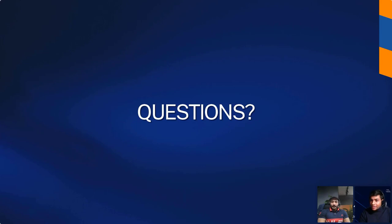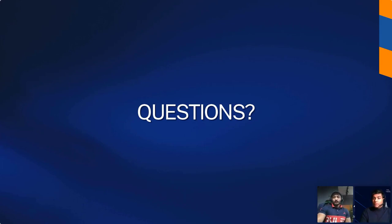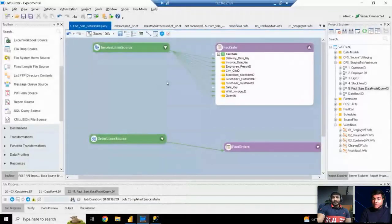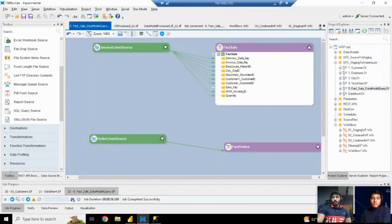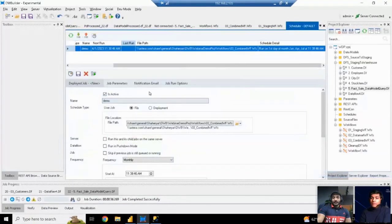There's a question from Tassin: 'How to execute a job — from which tool?' If you want to execute a data flow, there is a run button on top of each data flow which starts it manually. But if you want it to run automatically, you can schedule it from the scheduler as shown in the last step, and it will run automatically on your defined schedule.